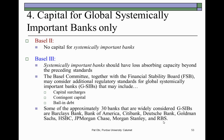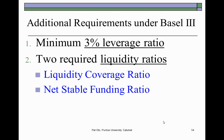The additional requirements in Basel III include a minimum 3% leverage ratio and two required liquidity ratios: the liquidity coverage ratio and the net stable funding ratio. Before explaining these ratios, it is important to address an additional problem that banks often face as a result of the nature of their banking business — a problem in addition to loan delinquencies that the capital adequacy standards already address.